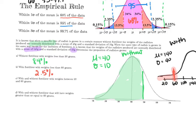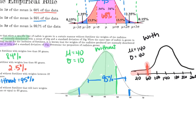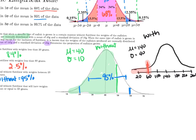Now we find weights between 20 and 60 grams for both curves. On the without-fertilizer curve, 20 and 60 are two standard deviations to the left and right of the mean of 40, so that's 95 percent. On the with-fertilizer curve, 60 and 20 fall between negative two and negative three standard deviations, which equals just 2.35 percent.